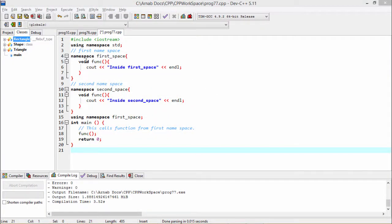In this program, we have defined two namespaces. The first one is the first space and the second one is the second space.